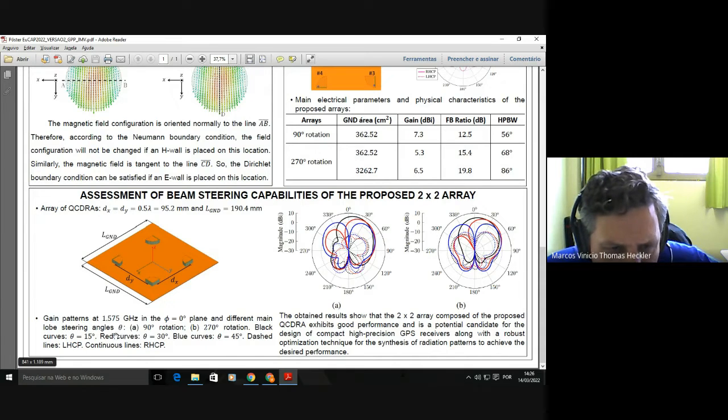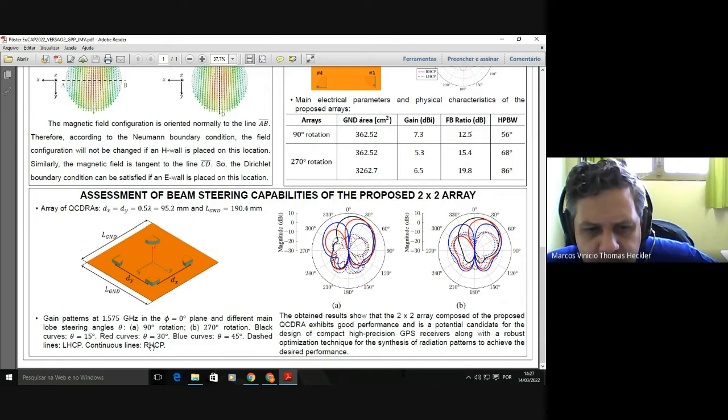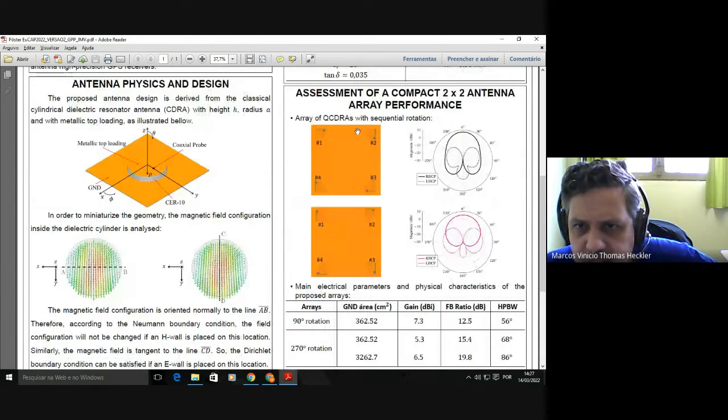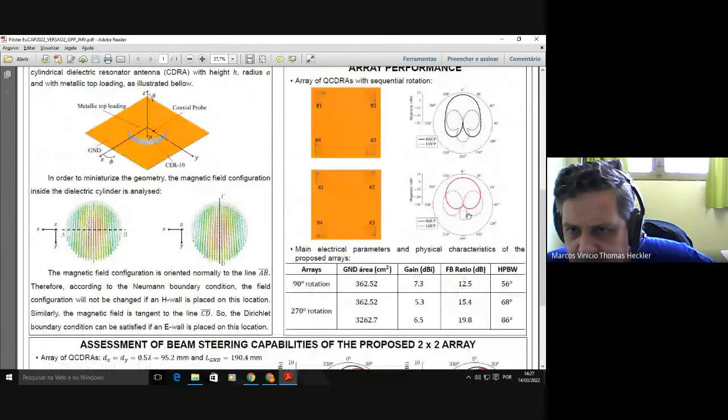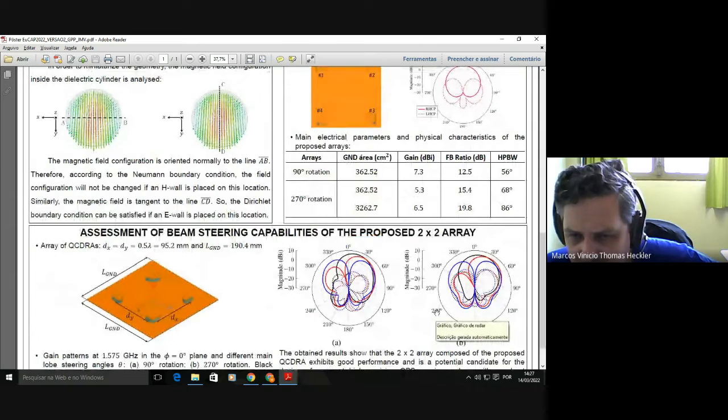The first case is for the red curve, which is applied when we try to steer the beam 30 degrees from the broadside. The black one is 15 degrees, and blue curves are for beam steering 5.45 degrees from the broadside. Dashed lines represent the cross polarization, left-handed circular polarization, and continuous lines the co-polar, the main polarization, which is right-handed circular polarization. The pattern here on the left stands for this antenna here, and the pattern from the right for this antenna here. We can see that for using different orientation for the elements, this case here is capable of steering the main beam.